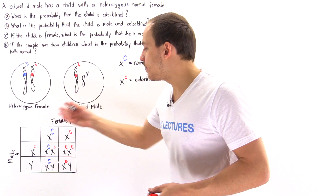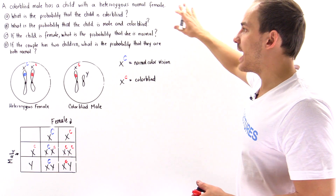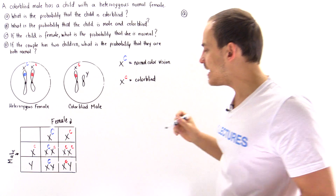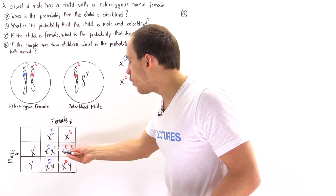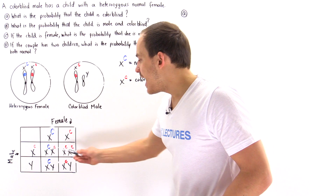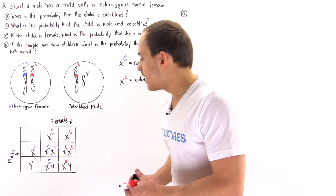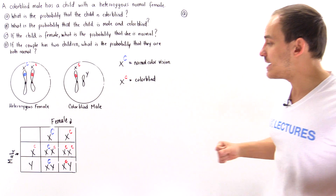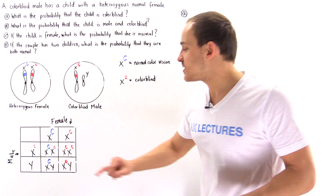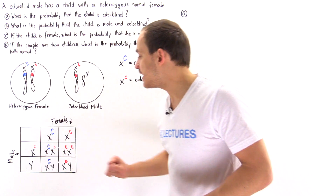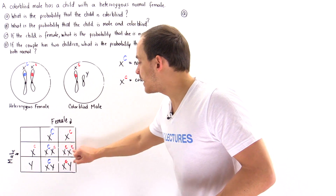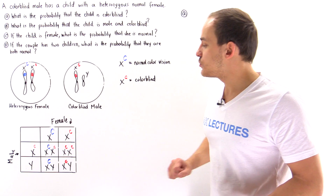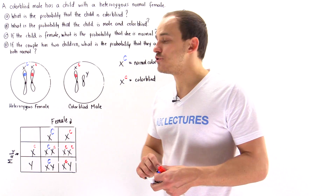Now that we have the Punnett square, let's go to parts A, B, C, and D. Notice that we have four individual cases, and each one has an equal likelihood of occurring — a 25% chance for each. Together these likelihoods add up to 100%.